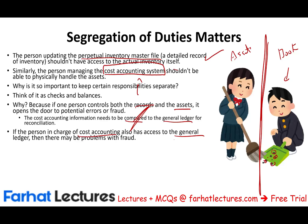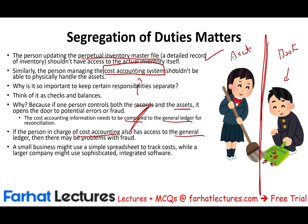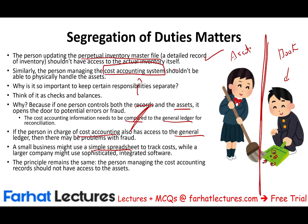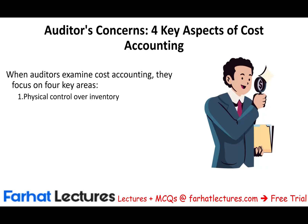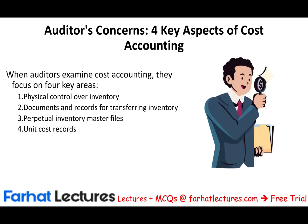The cost accounting system can range from a simple spreadsheet tracking production costs to enterprise software like SAP, Oracle, or QuickBooks — integrated or separate. Some companies keep things manually on paper. The principles remain the same: segregation of duties, and the person managing cost records should not have access to the asset. As auditors, we are concerned with four aspects of cost accounting: physical control of inventory, documents and records for transferring inventory, the perpetual inventory master file, and the unit cost record.